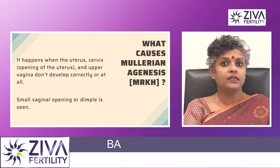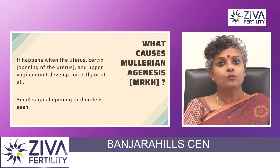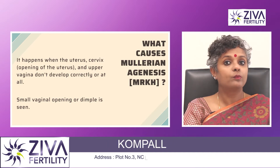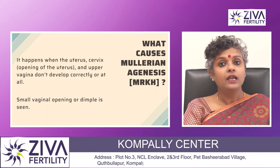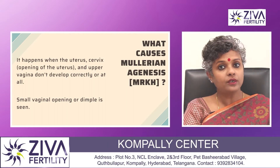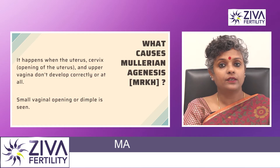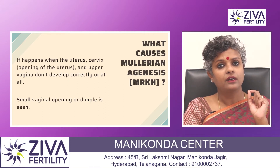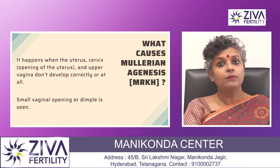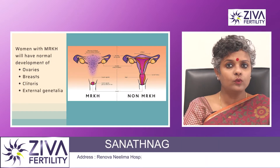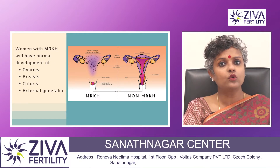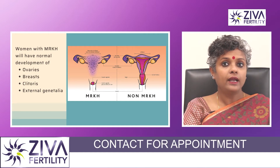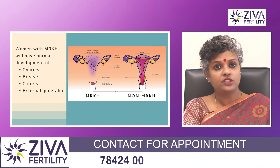What causes Mullerian agenesis? Mullerian agenesis happens when the uterus, cervix — which is the opening of the uterus — and the upper vagina do not develop correctly at all. Instead, there is a small vaginal opening or a small dimple. Women with this disorder have normal ovaries and will have normal development of breast, clitoris — the part of the vulva — and external genitalia.